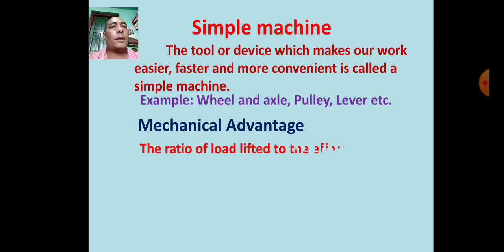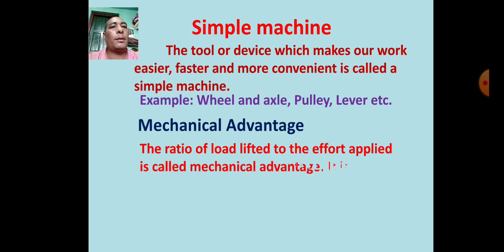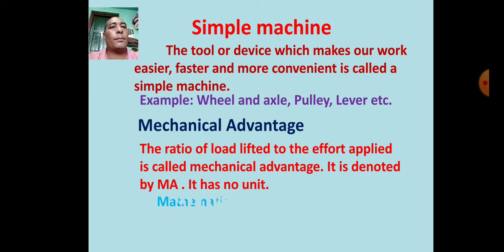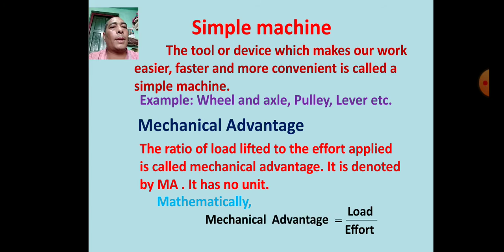The ratio of load lifted to the effort applied is called mechanical advantage. It is denoted by MA. It has no unit. Mathematically, mechanical advantage equals load upon effort.